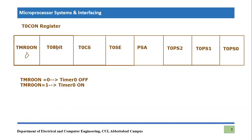The next bit is the Timer Zero Eight Bit selection bit. This is actually a selection mode that provides two different ways of operating the Timer Zero Control Register. Timer Zero can operate in two different modes: one is 16-bit mode and the other is eight-bit mode. In eight-bit mode you can count up to 8 bits, and in 16-bit mode you can count up to 16 bits.